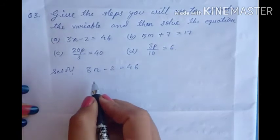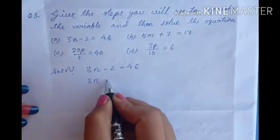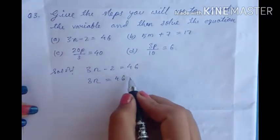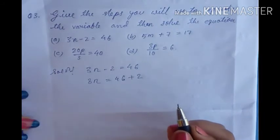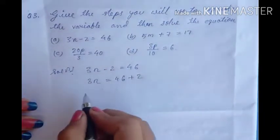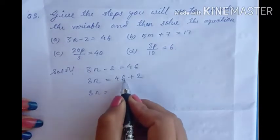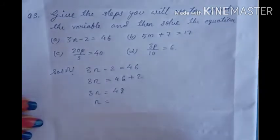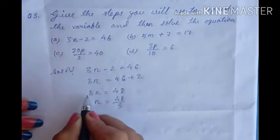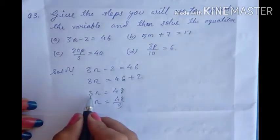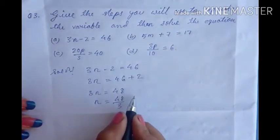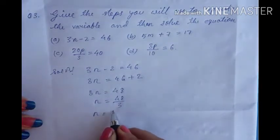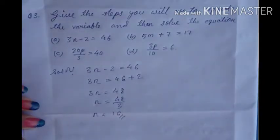For A: 3n minus 2 equals 46. We keep 3n on the left and transpose minus 2 to the right hand side — minus becomes plus. So 3n equals 46 plus 2 equals 48. Then we need only n, so we divide: n equals 48 divided by 3, because on the left it is multiply. So n equals 16.